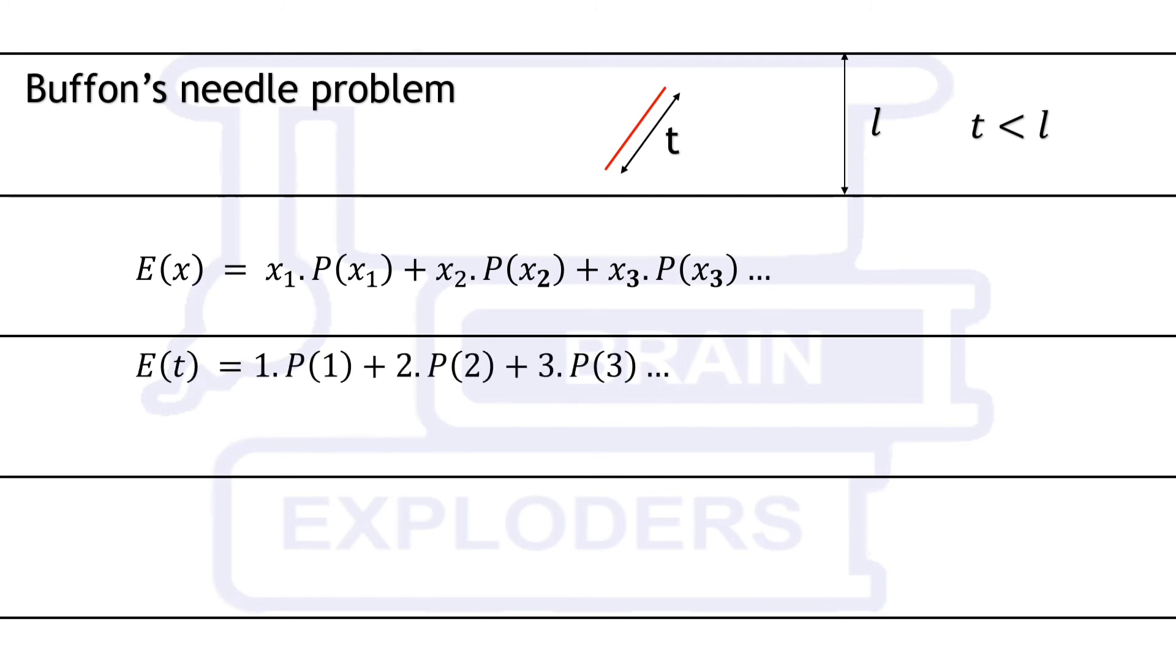Probable number of intersections is 2t over pi L which is equal to 1 times probability of one intersection plus 2 times probability of two intersections and so on. This needle cannot intersect two or more times so P2, P3, P4 becomes 0.